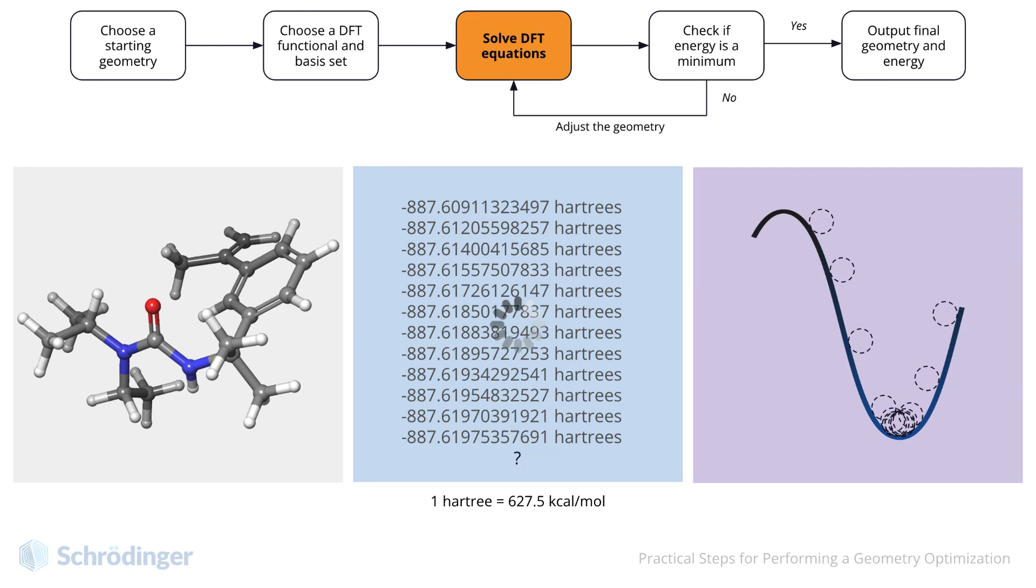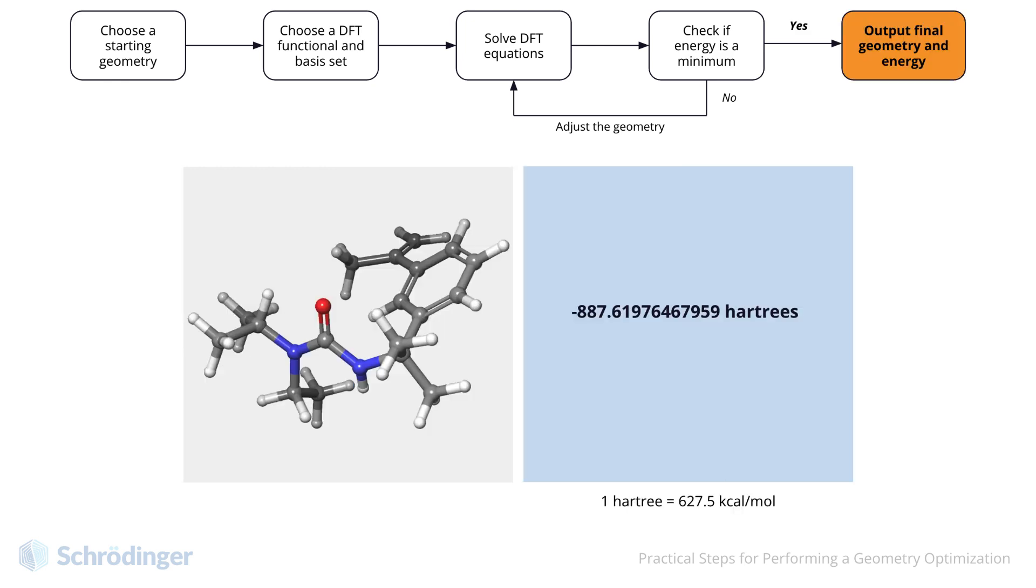Finally, this time when we check if the energy is a minimum, we do meet the criteria. We can output the final geometry and energy, a successful geometry optimization.